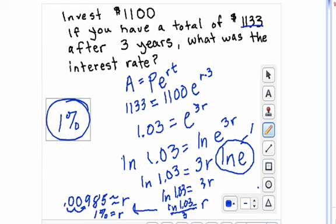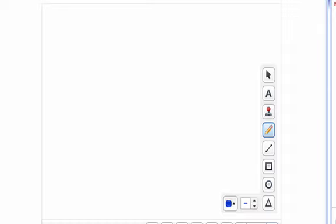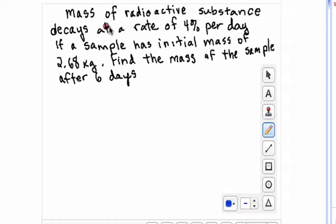So let's look at another example. If you have a mass of radioactive substance that decays at a rate of 4% per day, if the sample has initial mass of 2.68 kilograms, find the mass of the sample after six days. I'm just going to underline some of the important information. And its decay is important. Because remember what happens when it's a decay, we're going to make the rate a negative value.